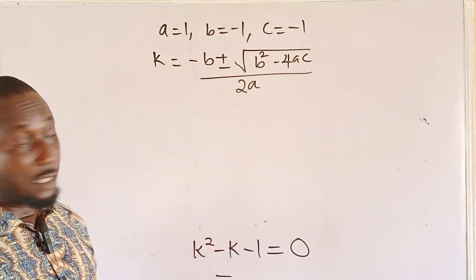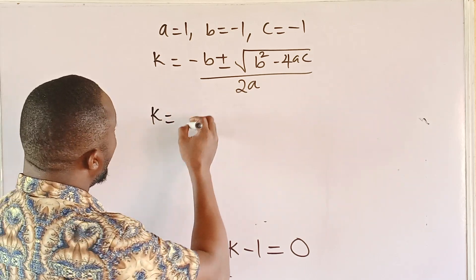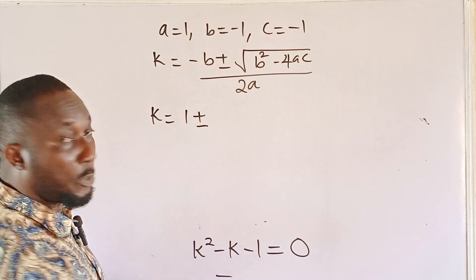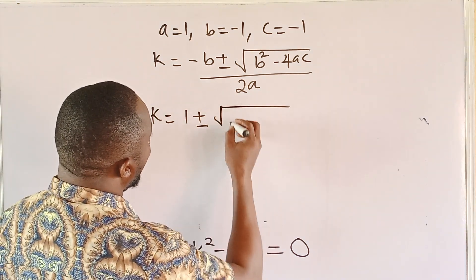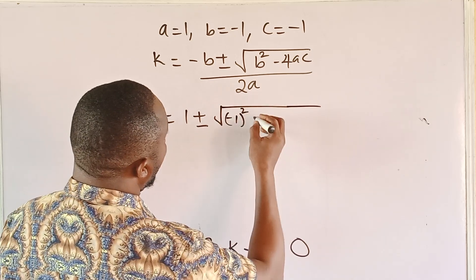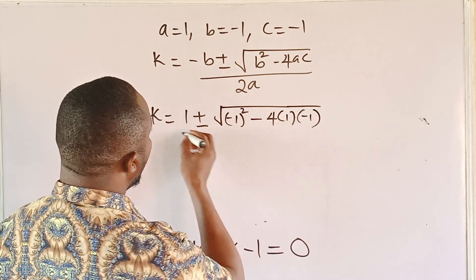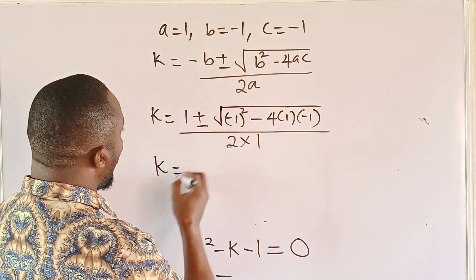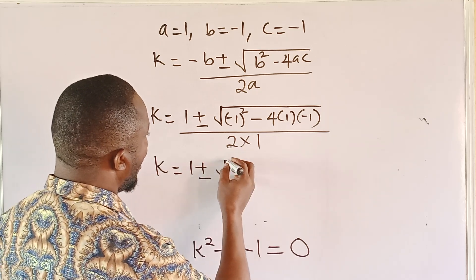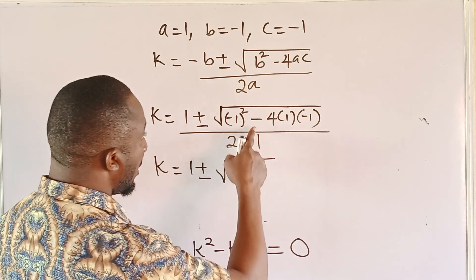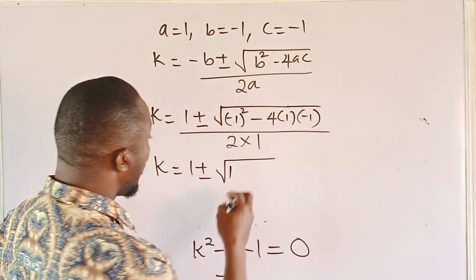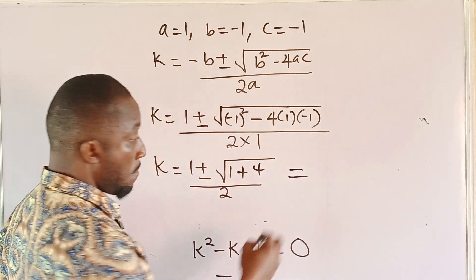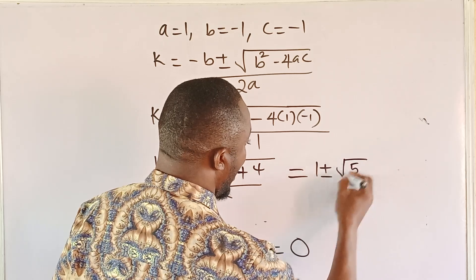Substituting the values of a, b, and c, we have k equal to 1 plus or minus — because negative b becomes a double negative, which is positive — then the square root of (−1)² minus 4 times 1 times (−1), all upon 2 times 1. Squaring negative 1 gives 1, and negative 4 times 1 times negative 1 gives positive 4. So it gives us k equal to 1 plus or minus radical 5, all upon 2.